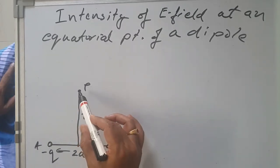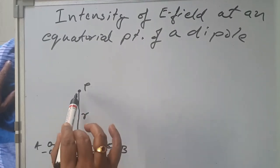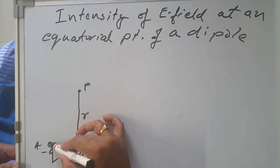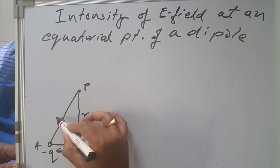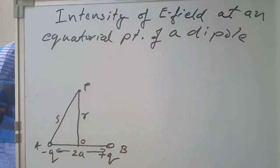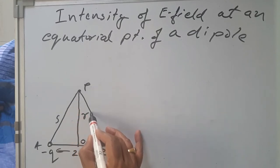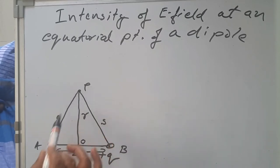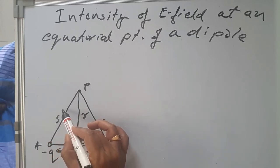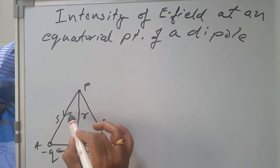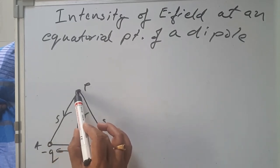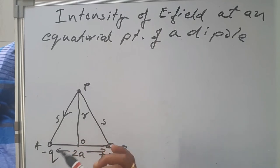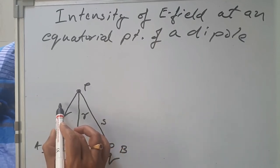The resultant electric field here will be the vector sum of electric field due to these two charges — negative and positive. Point P is at a distance s from the negative charge, and also at the same distance s from the positive charge. The intensity of electric field at point P due to the negative charge will be directed from P towards A, because a unit positive charge is attracted by the negative charge. So this is EA.